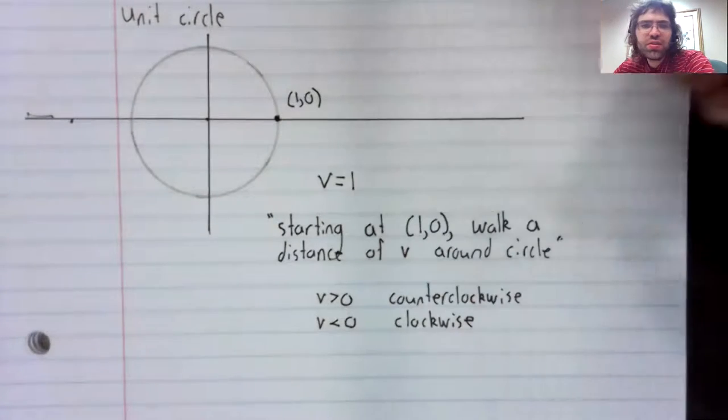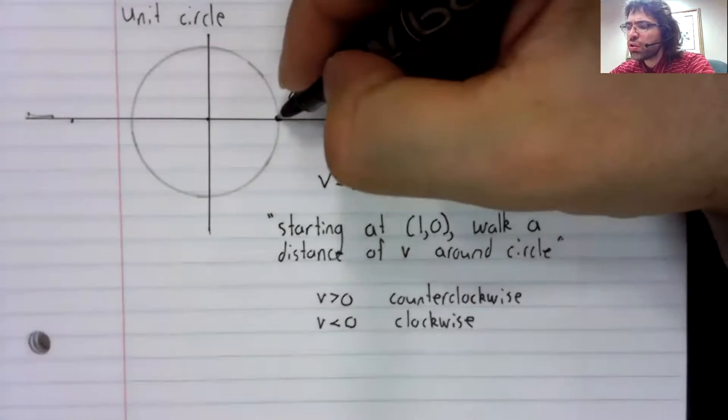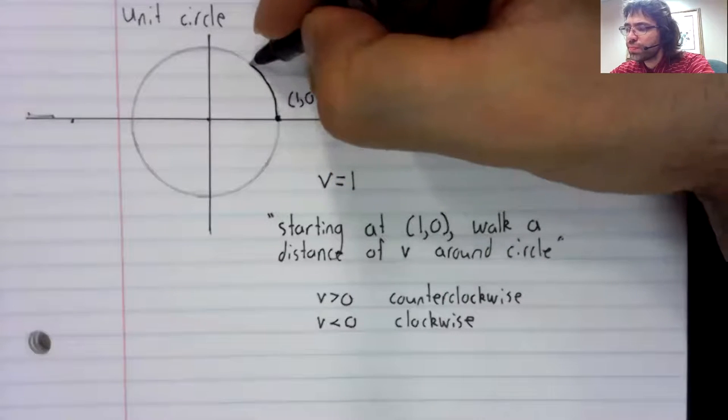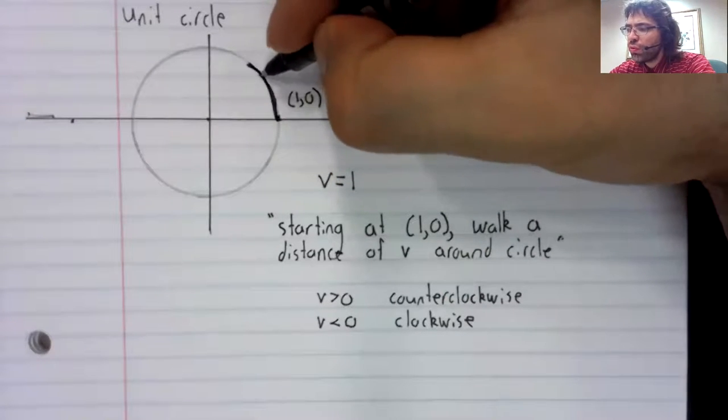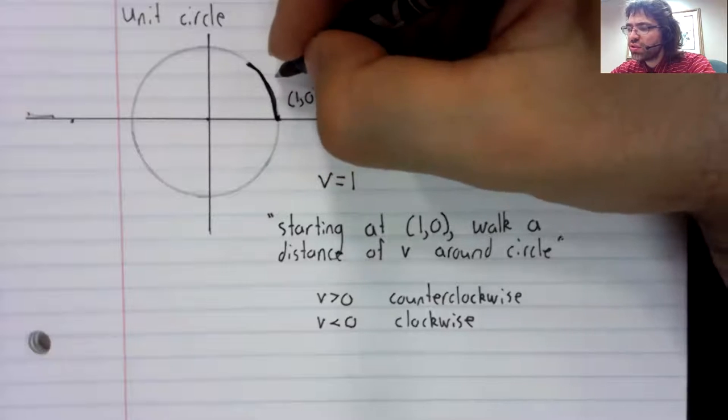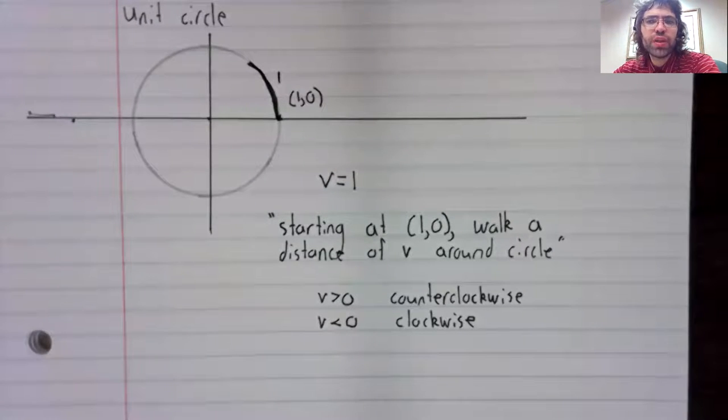So let's say V is one. You start here and travel a distance of one unit around the unit circle.